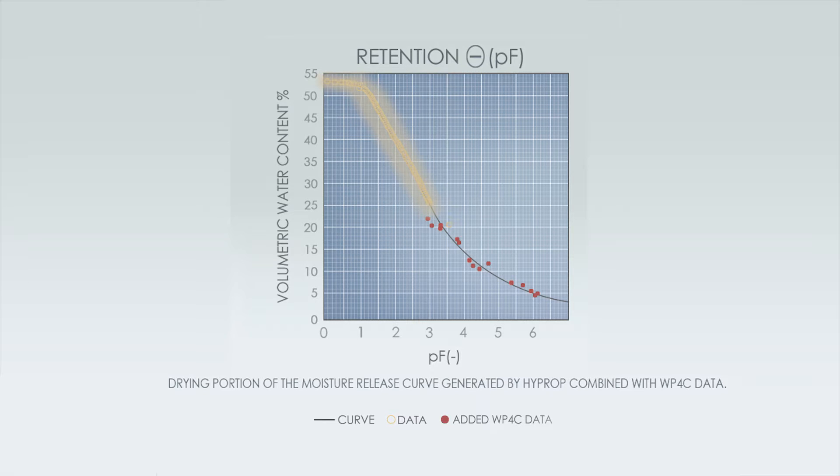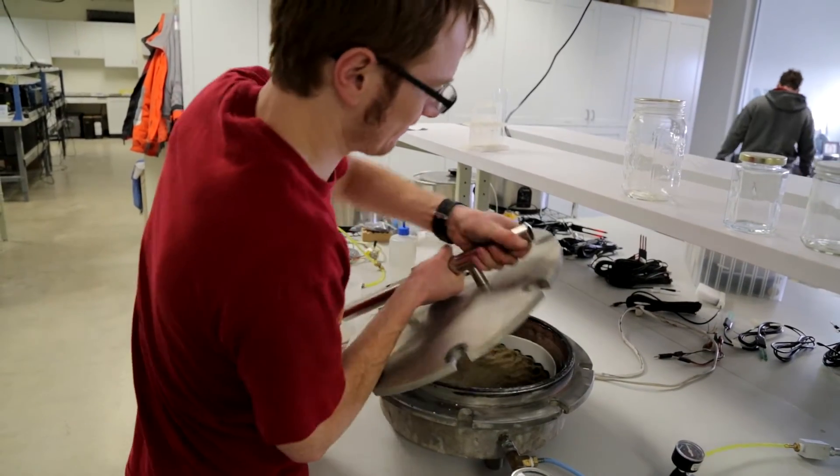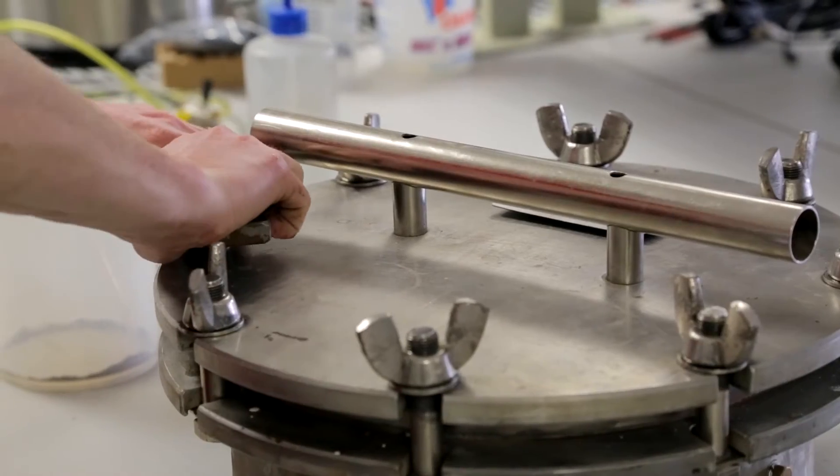But how do you get the data points? Pressure plates only give you a few data points. Set aside all the issues with pressure plates, how long they take, and how accurate they really are. The real problem is they only give you a few data points to understand the full soil moisture release curve.